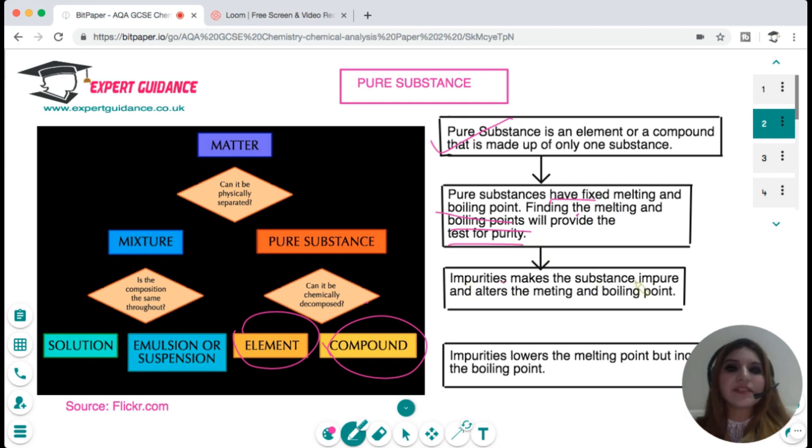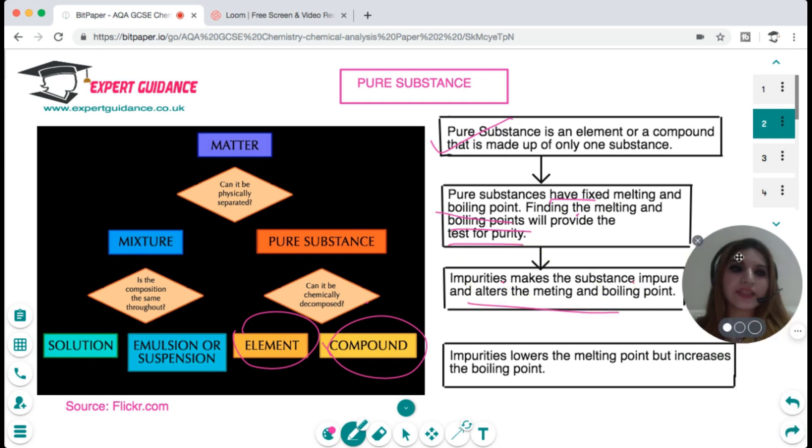Impurities make the substance impure and alter the melting and boiling point. Generally impurities lower the melting point but increase the boiling point.